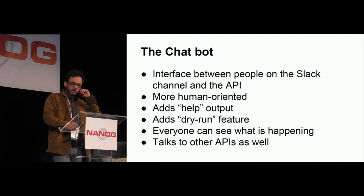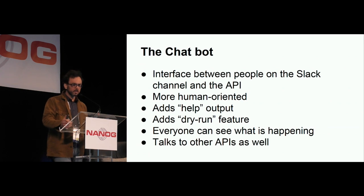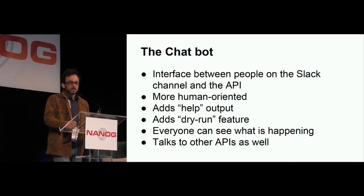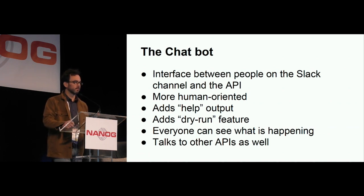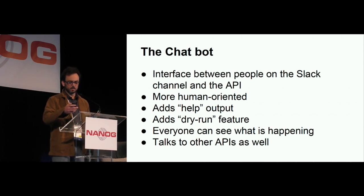So, so far so good. We have the API, it's working. Now, how do we use it? I noticed this trend that operators really like chatbots because it has many advantages. The chatbot is our interface between the people on the Slack channel and the API. It's more human-oriented. It adds some help output — so if you forget the syntax, and of course you forget the syntax every time you need the help, you can ask it to remind you how to specify a flow. It has a dry run feature, which is cool — you can see what you're doing and get some validation before you actually commit. Everyone in the team can see what is happening — I think that's the main benefit. Before chat ops, we were used to typing things on the command line and then posting it on the chat so everybody knew what we were doing. But that's two steps — this is one. And with the same chatbot, you can talk to different APIs and do different things, and in fact that's what we do.